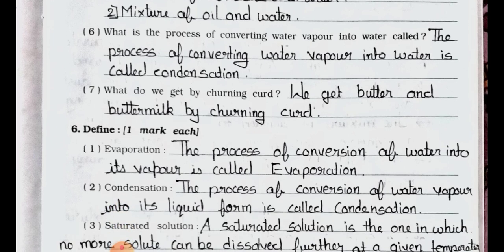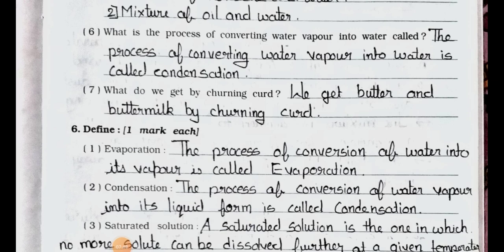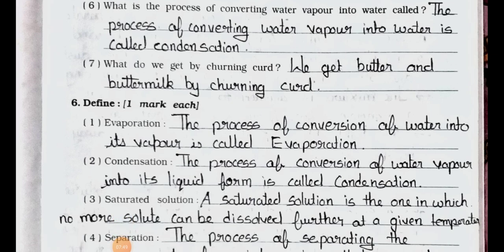Number seven: What do we get by churning curd? Answer: We get butter and buttermilk by churning curd. We will see Main Six in the next video. Stay safe, stay healthy. Okay, bye.